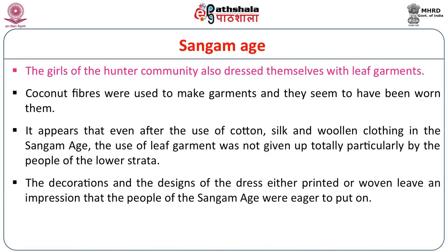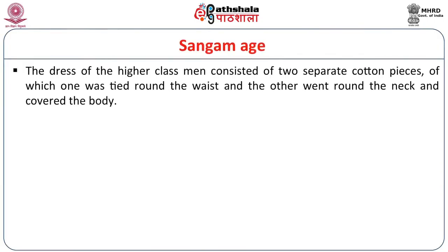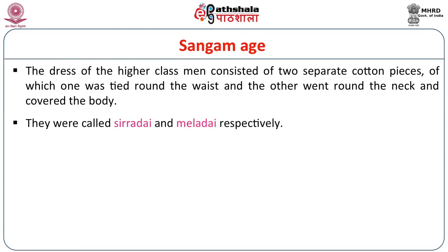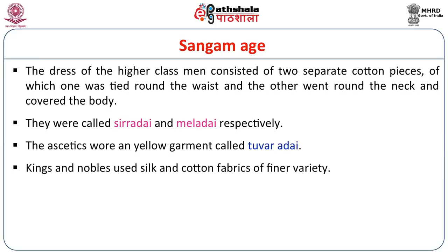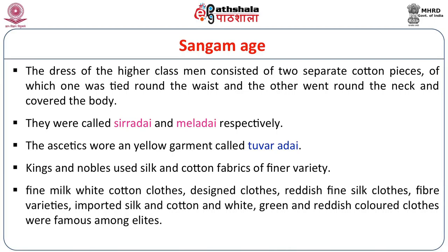The decorations and designs of the dress, either printed or woven, leave an impression of what kinds of dresses they were eager to wear. The dress of the higher class of men consisted of two separate cotton pieces — one tied around the waist and the other going around the neck and covering the body — called Siradai and Meladai respectively. The ascetics wore a yellow garment called Tuvaradai. Kings and nobles used silk and cotton fabrics of finer variety, with fine white cotton clothes, designed clothes, reddish fine silk, imported silk and cotton, and white, green and reddish colored clothes being famous among the elites.